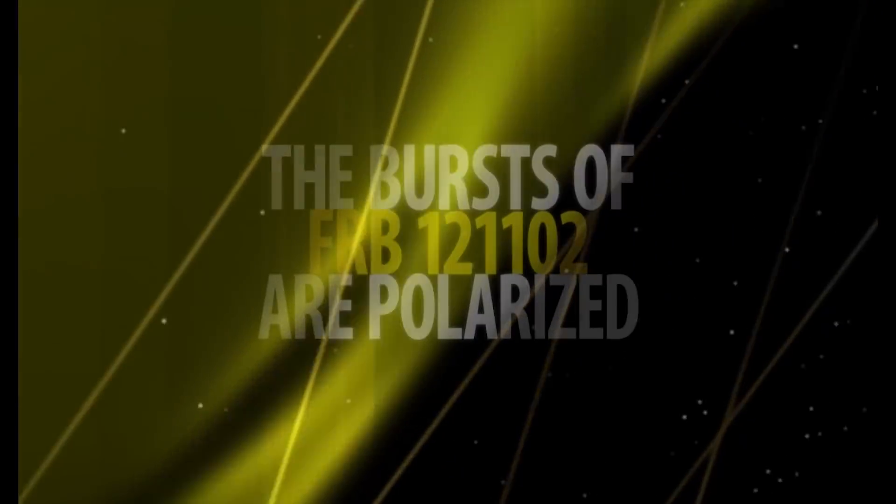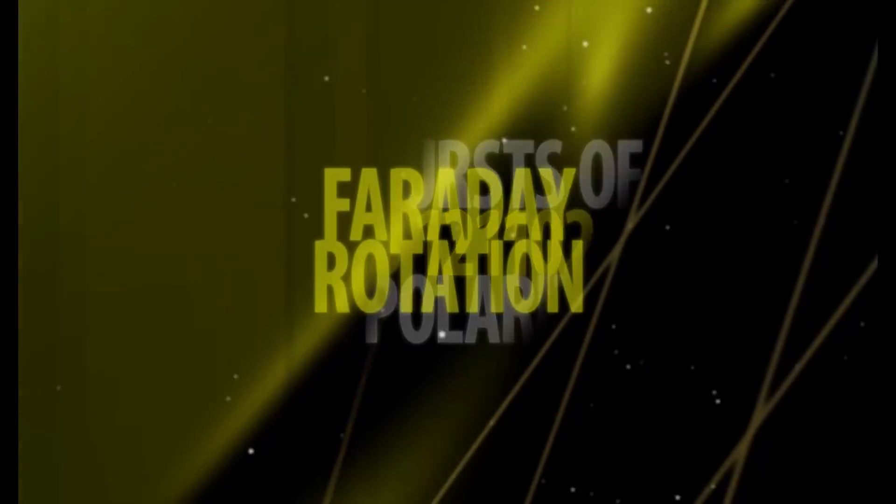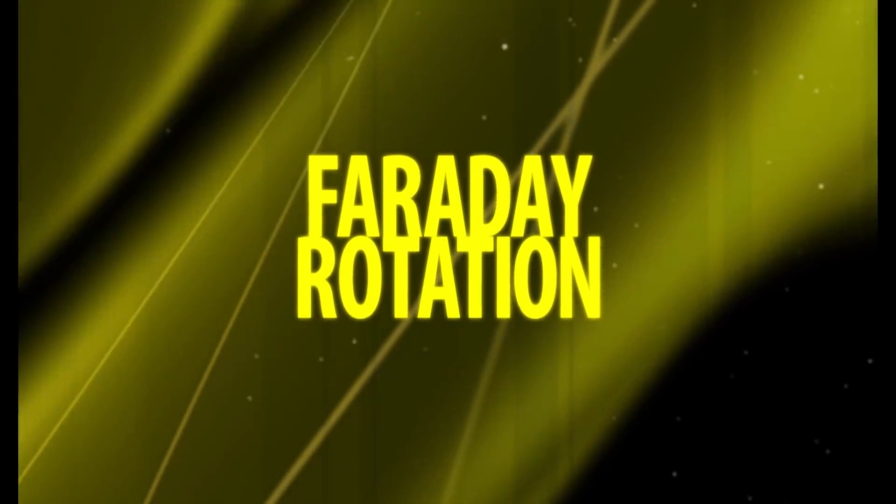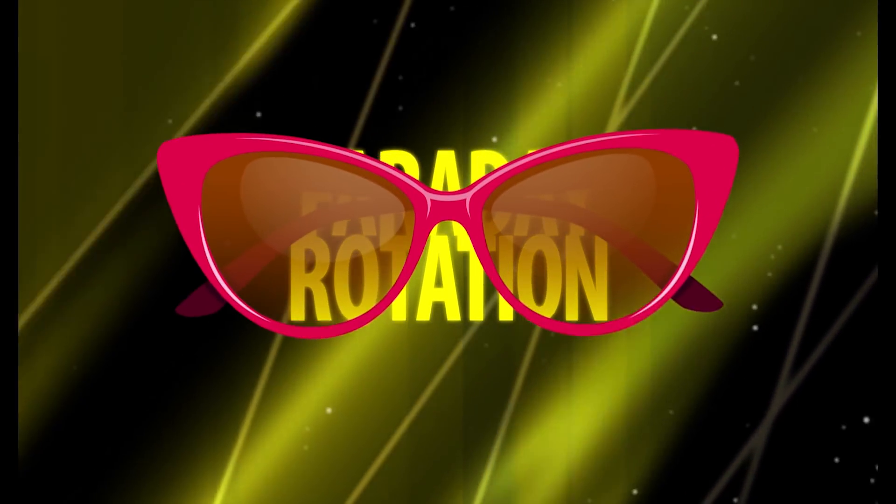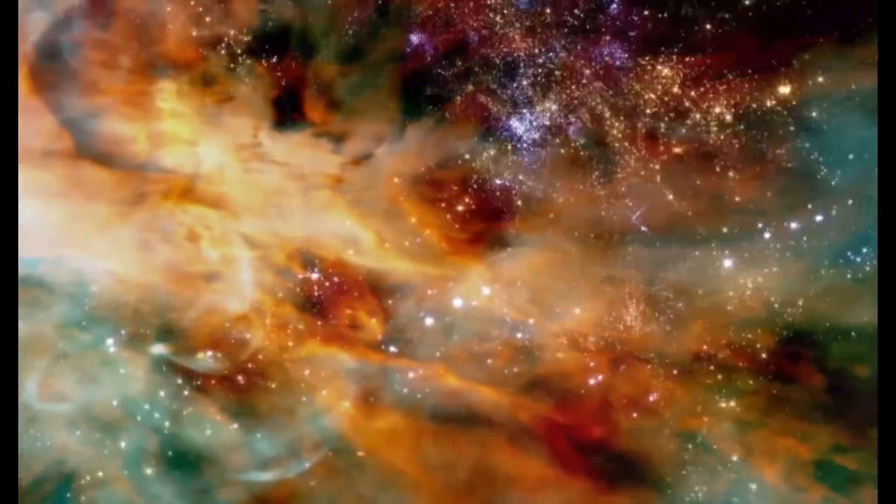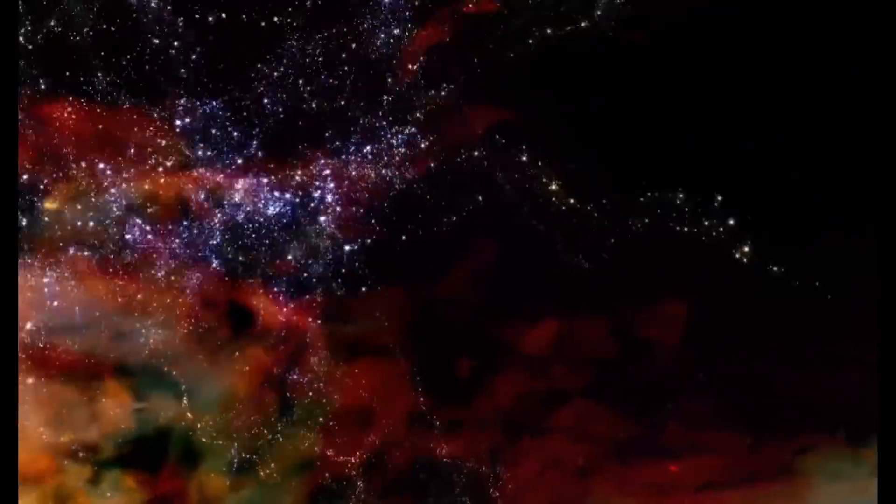The thing is that the bursts of FRB 121102 are polarized. It's an effect called Faraday rotation, which deforms radio waves if they pass a magnetic field. To put it in layman's terms, your sunglasses work the same way, by filtering bright sunlight. But there's a connection. The stronger a magnetic field is, the more radio waves twist.